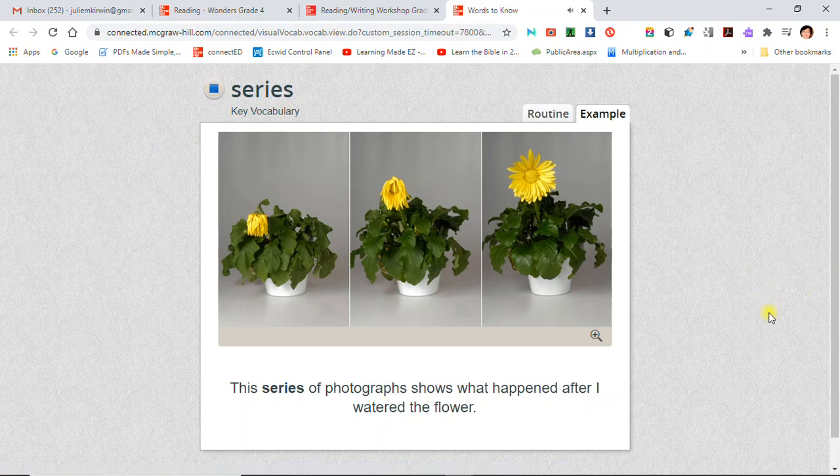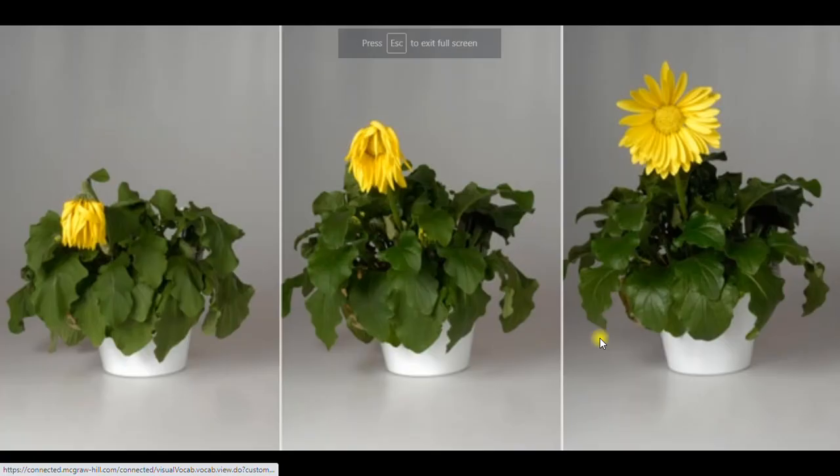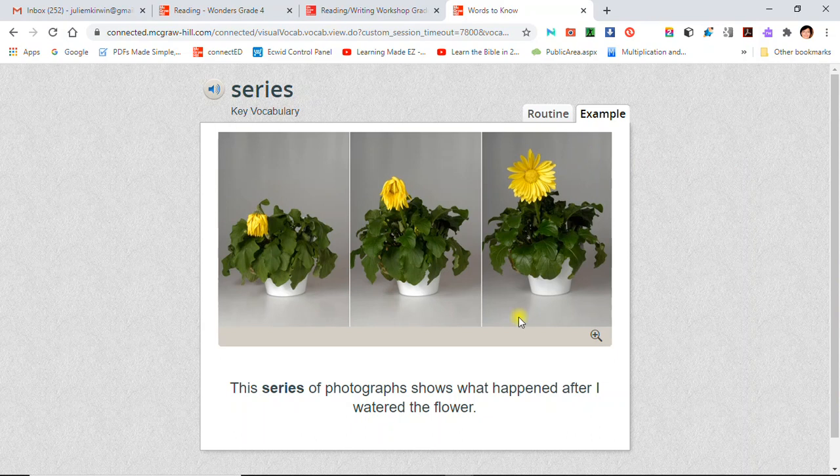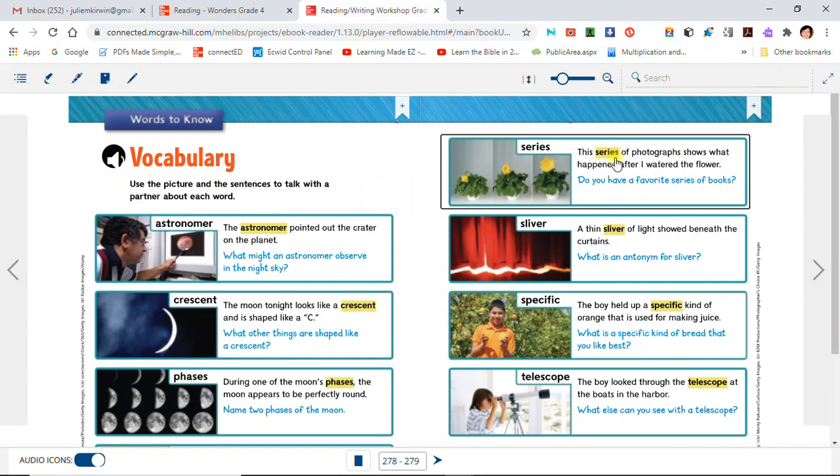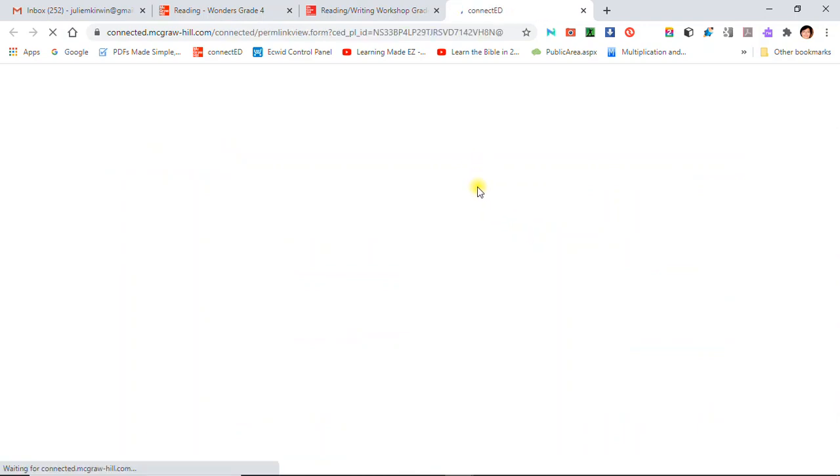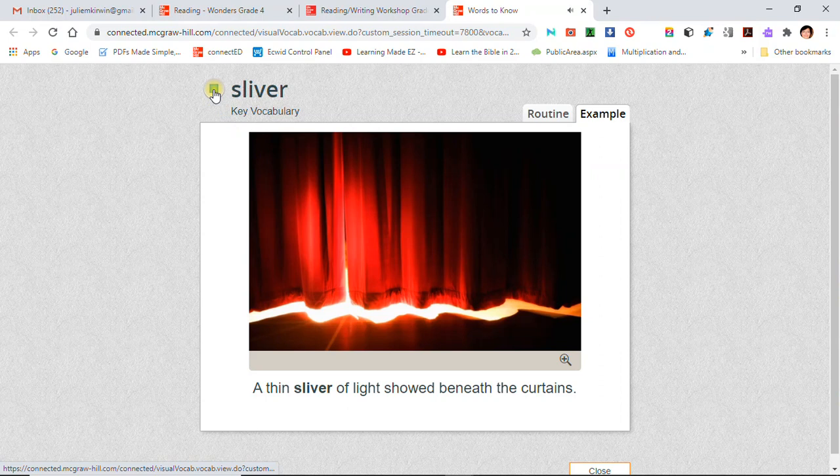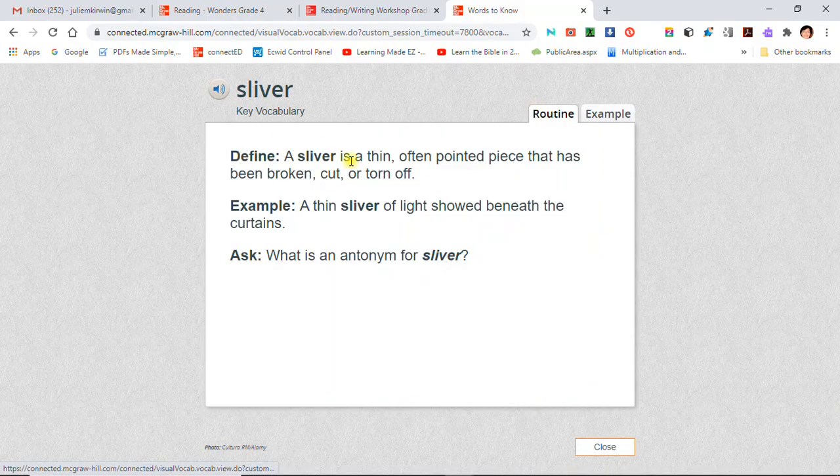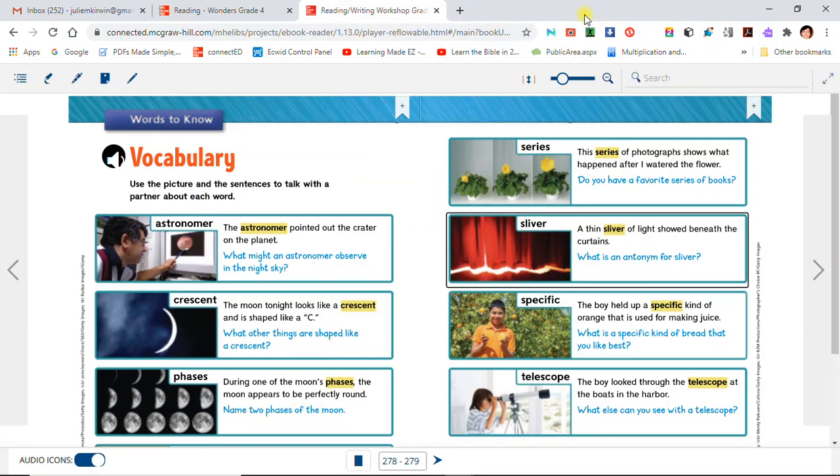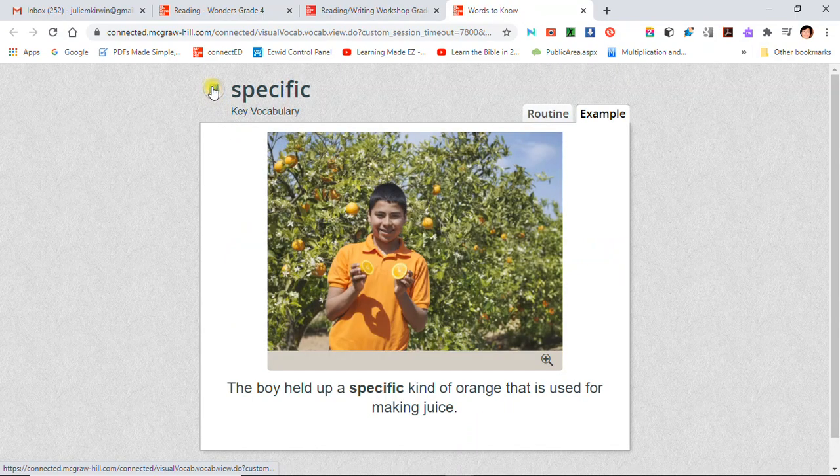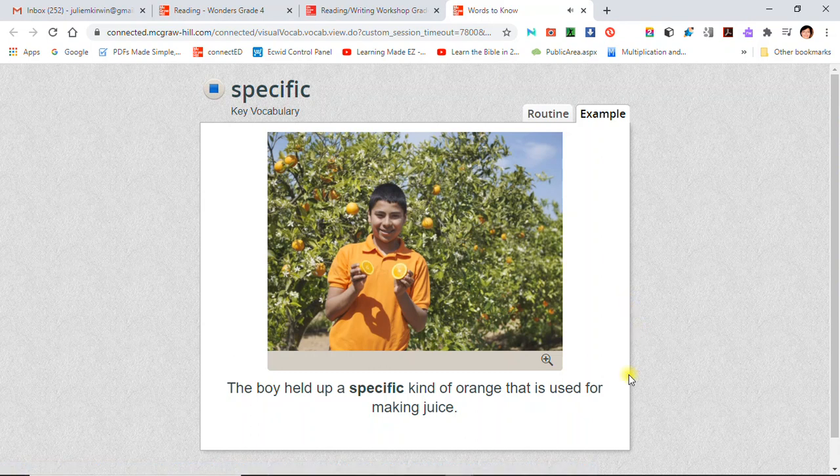Series: This series of photographs shows what happened after I watered the flower. Sliver: A thin sliver of light showed beneath the curtains. Specific: The boy held up a specific kind of orange that is used for making juice.